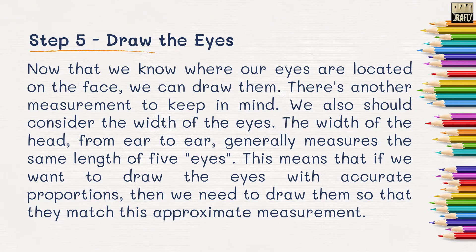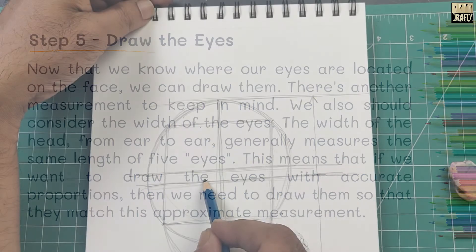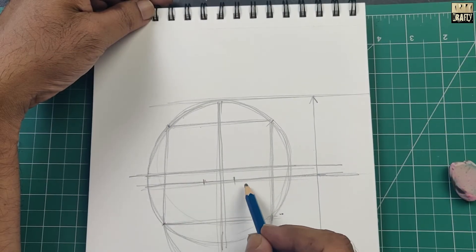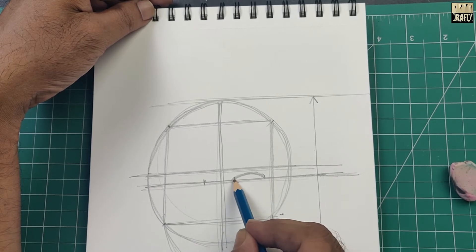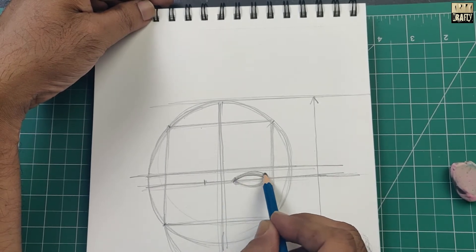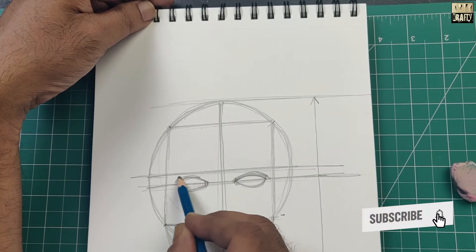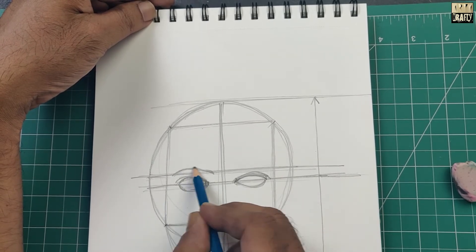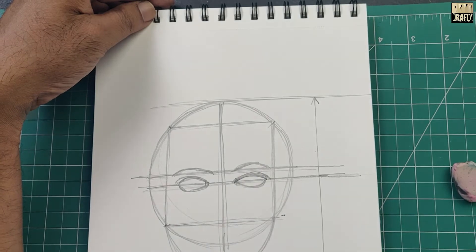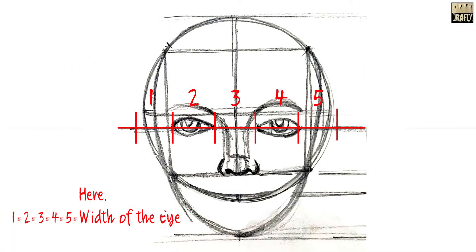Step 5. Draw the eyes. The width of the head from ear to ear generally measures the same length of five eyes. This means that if we want to draw the eyes with accurate proportions, then we need to draw them so that they match this approximate measurement.